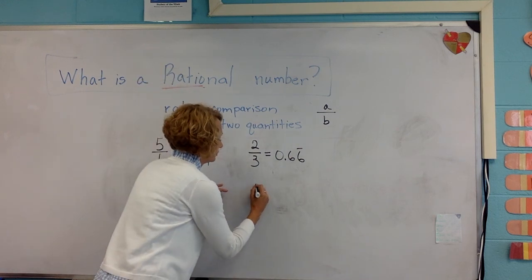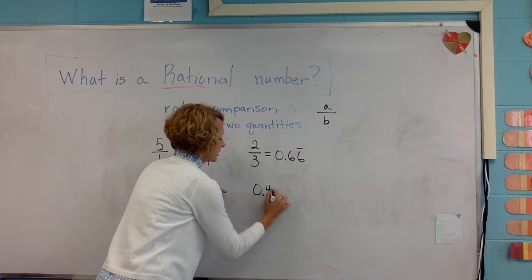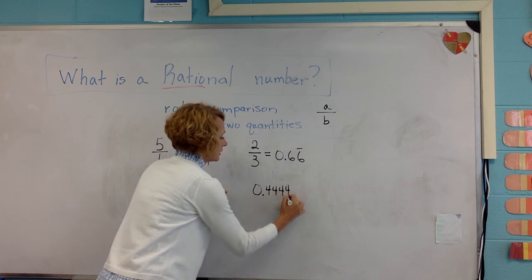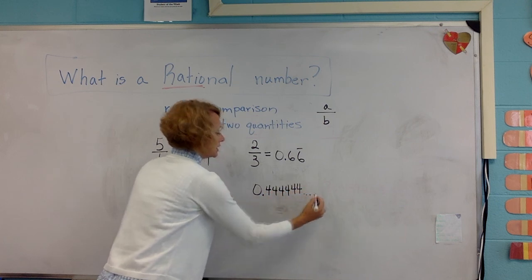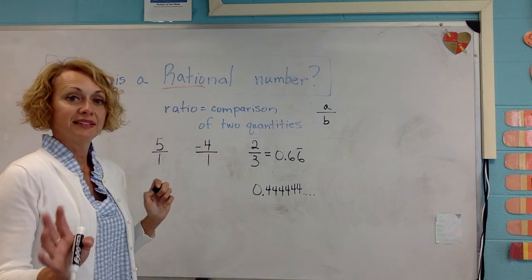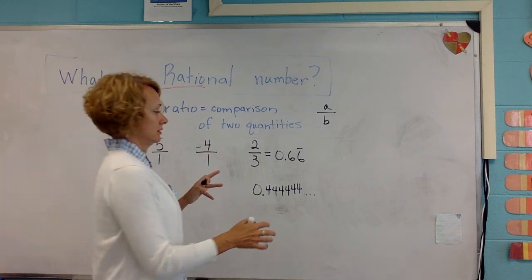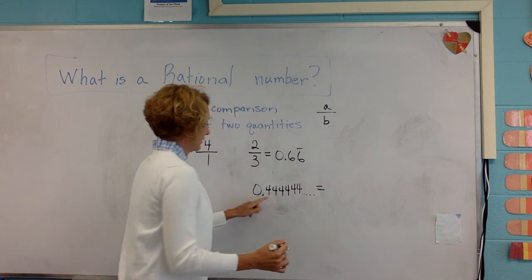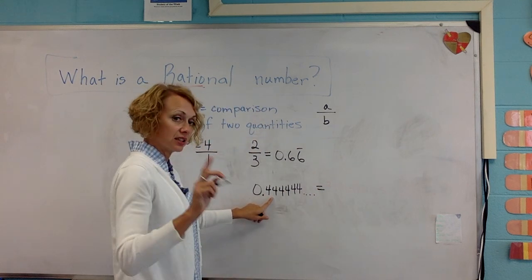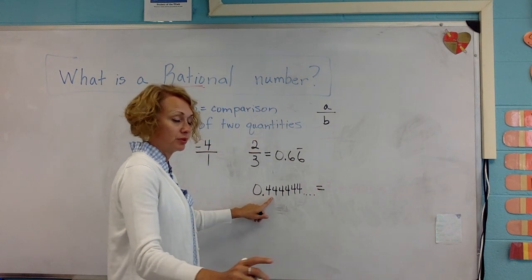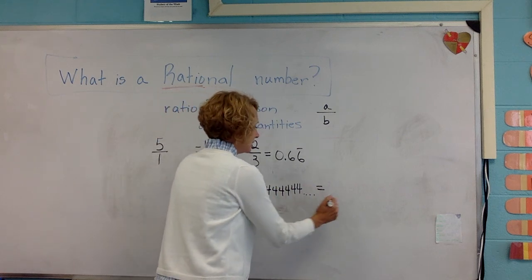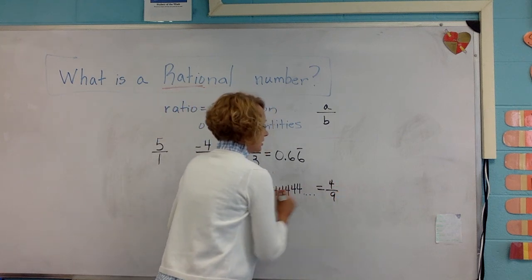So what if I give you something like this? A decimal that has fours that are repeated. Here's what I want you to know about decimals that repeat. You can identify that thing and say yes it is a rational number because I know it can be written as a fraction.